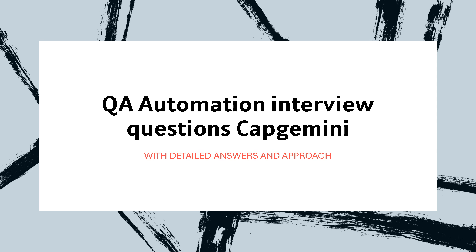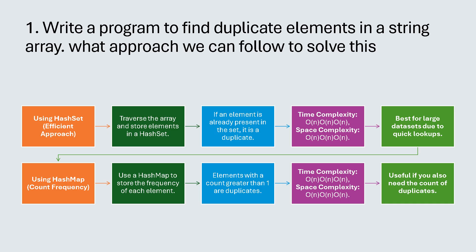The very first question asked is to write a program to find duplicate elements in a string array. What approach can we follow to solve this? We can have multiple approaches. We can use the HashSet approach — it is an efficient approach. What we do is traverse the array and store each element in a HashSet. If an element is already present in the set, it is a duplicate.